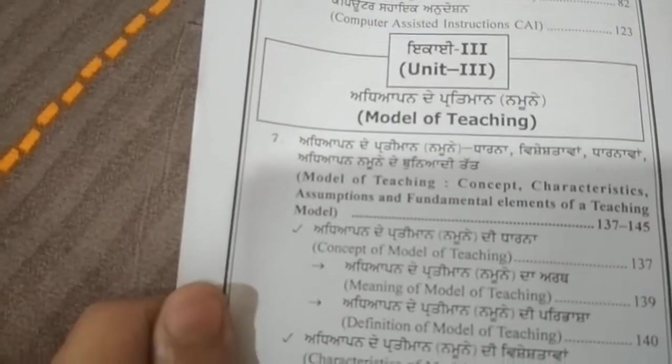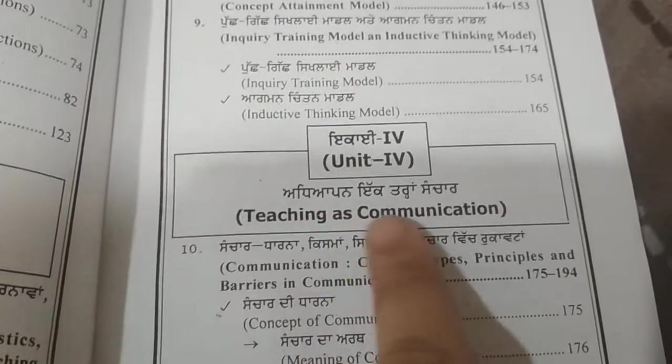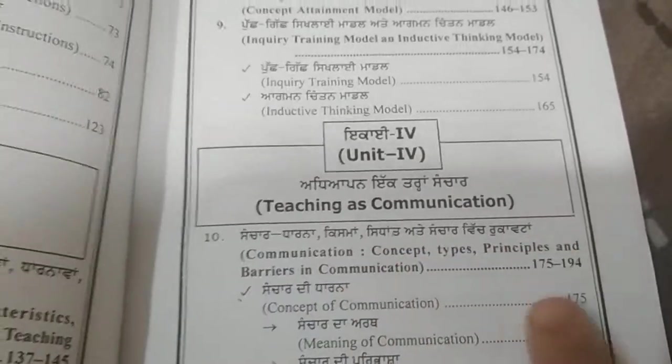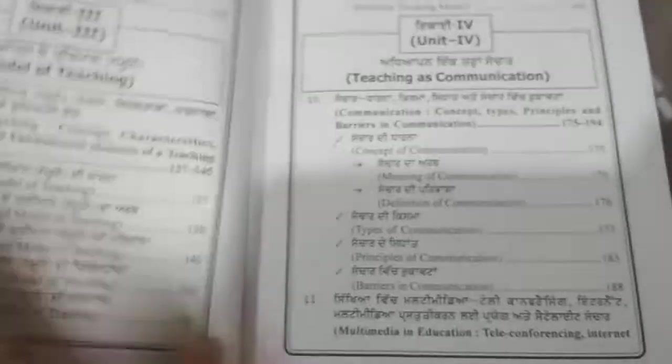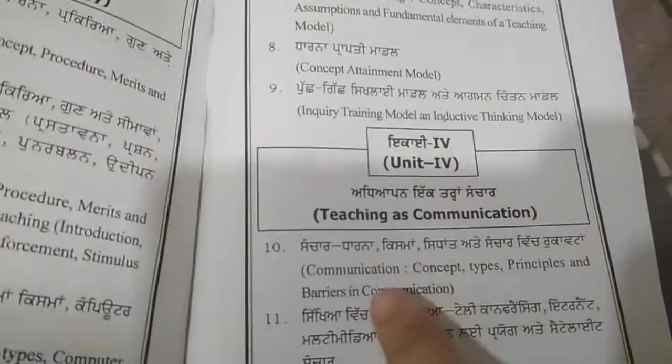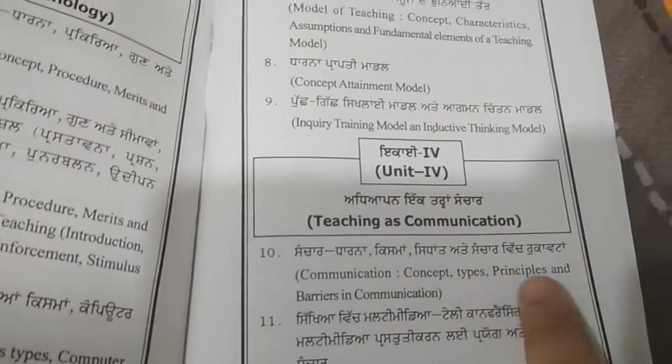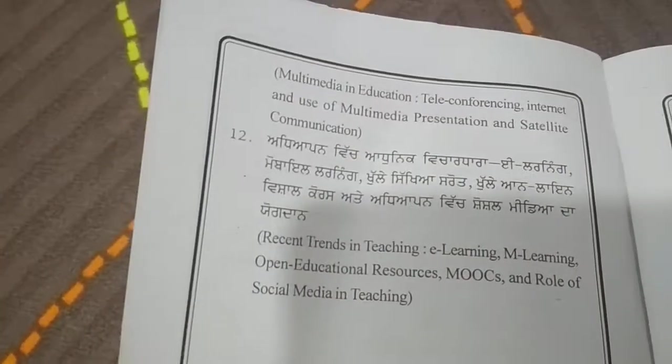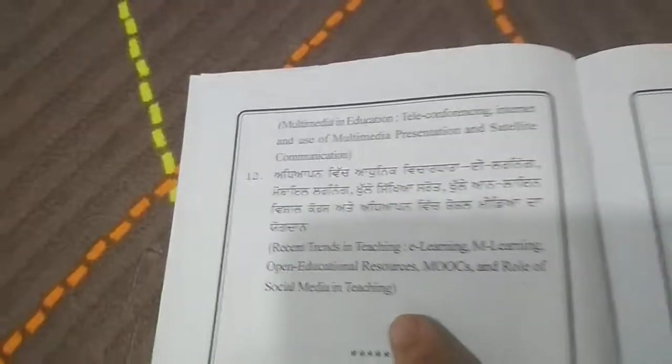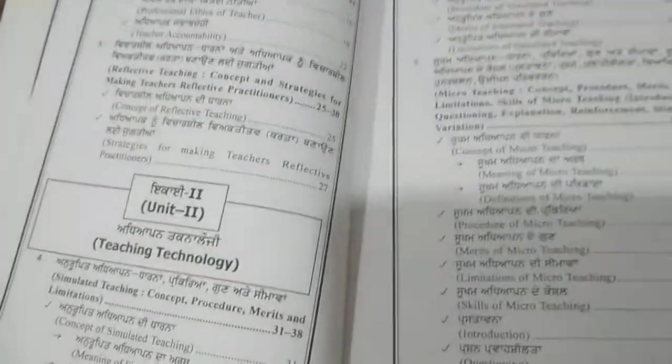You can verify — in unit 3, Model of Teaching, concept and characteristics are given. Unit 4 can also be verified: Teaching as Communication covers concept, types, principle barriers with subtopics, and then multimedia and education are given. In the contents also, communication concept types and teaching as communication are listed, followed by multimedia.